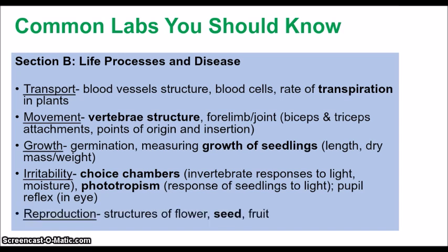The last topic in Section B is reproduction. Know the structures of the flower, the differences between wind-pollinated and insect-pollinated flowers, the structure of a seed and how to label it, and the structures of a fruit. These are common diagrams you may need to draw. Regarding disease, be aware of the life cycle of the mosquito: adult lays eggs, eggs hatch into larvae, larvae develop into pupae, and back to adult.